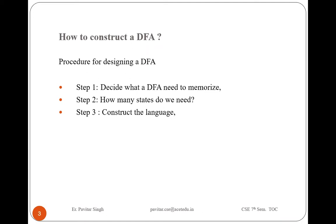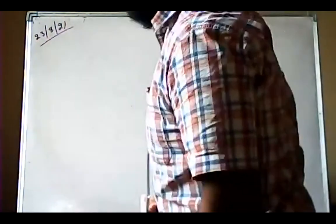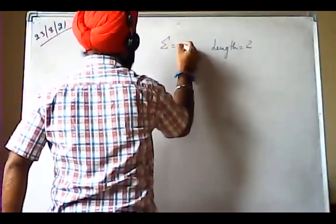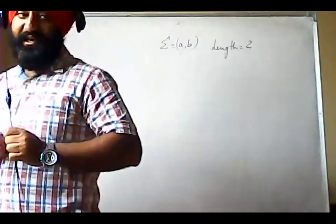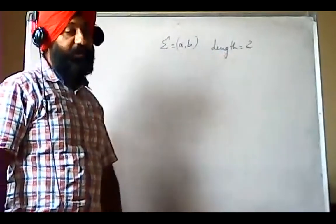Let's proceed to the first example. Construct a DFA which accepts a set of all strings over sigma equals {a, b} of length two. So you have to construct a DFA whose input alphabet is {a, b} with length equal to two.